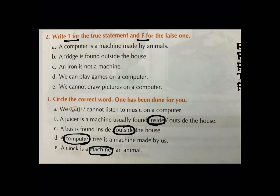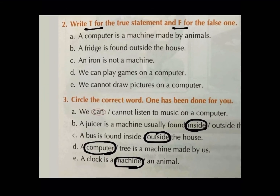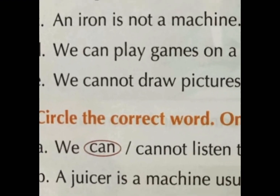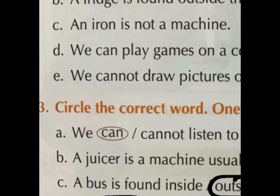Third exercise: Circle the correct word. One has been done for you. So, let us read first statement of third exercise A: We can listen to music on a computer. That is true. Hum music sun satay hai na computer pe? Yes. Is liye hum ne 'can' ko circle kar di hai. Aise hi hum mein doh options har ek statement mein given honge, and we have to circle the correct one. Let us read the B statement of third exercise.